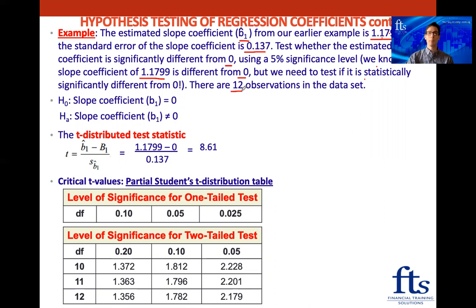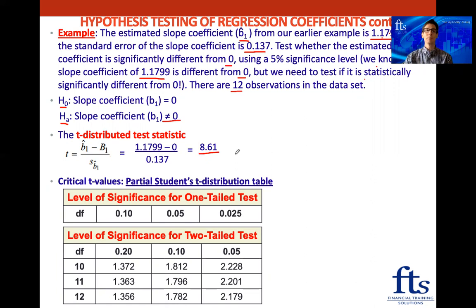We have 12 observations. Starting with the alternative hypothesis: we want to support that the slope coefficient is not zero, because if it is not zero it will be significant. The null hypothesis is that it equals zero. To calculate the test statistic, we take the estimated slope coefficient 1.1799, subtract the hypothesized value of zero, and divide by the standard error of the slope coefficient.